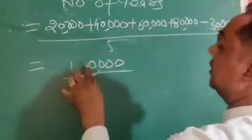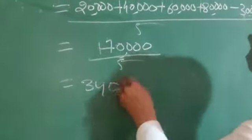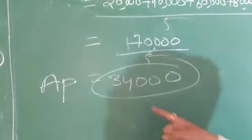170,000 divided by 5 comes to 34,000, which is called average profit. Once average profit is calculated,